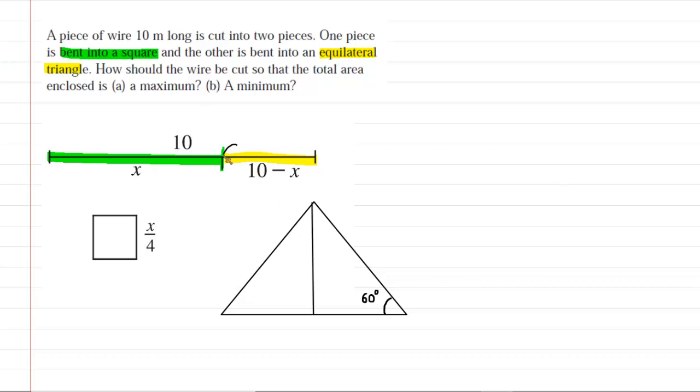Remember that the entire perimeter of that equilateral triangle is going to be 10 minus x. So that would be the total length of all three sides.